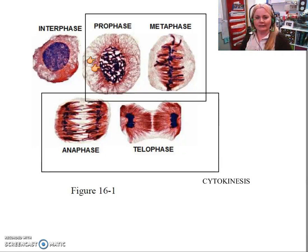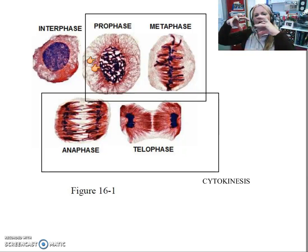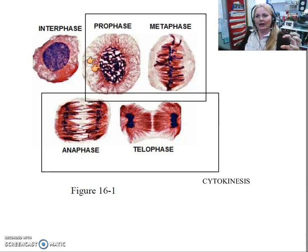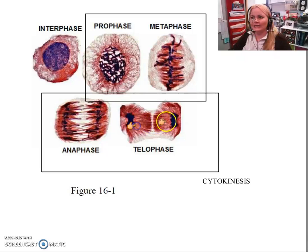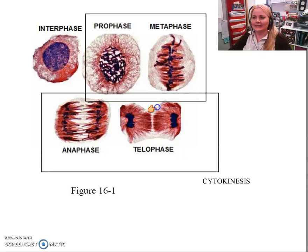The spindle fibers pull the chromosomes toward the center of the cell and arrange them there. Then those same spindle fibers pull the cell apart. A new nuclear membrane forms around each nucleus in telophase, and then a new cellular membrane forms — that's cytokinesis.